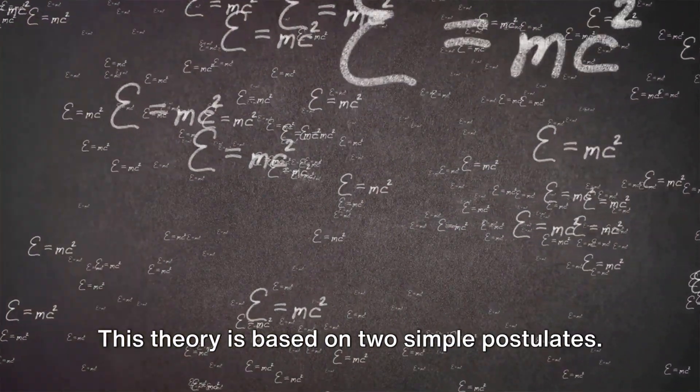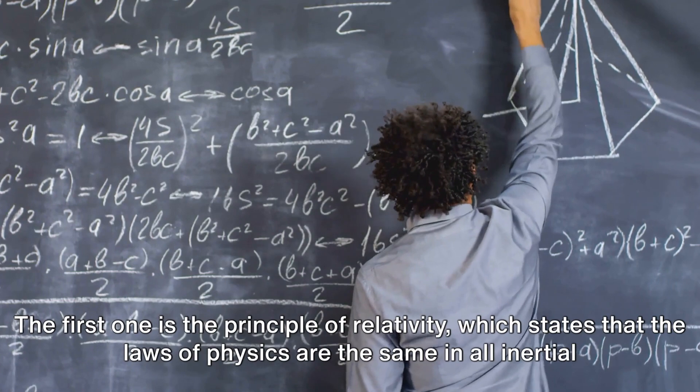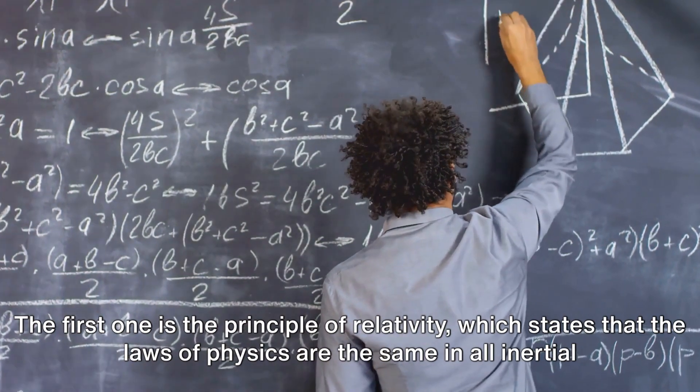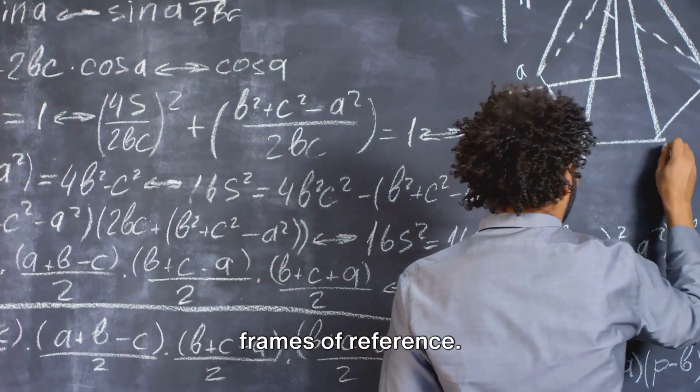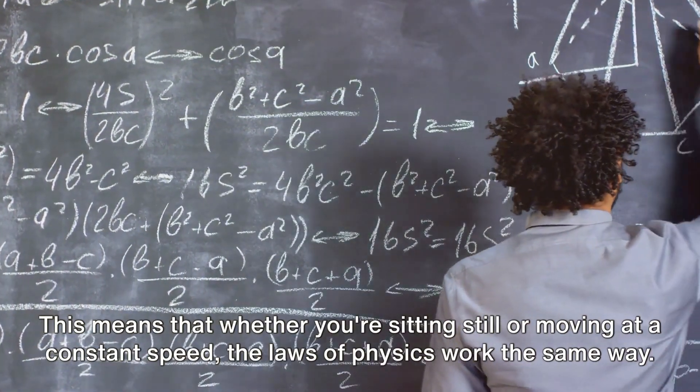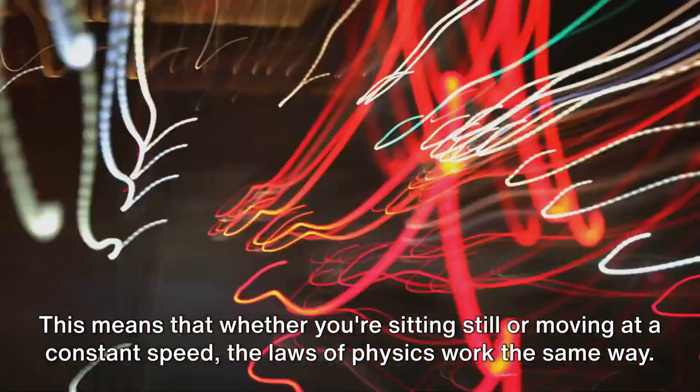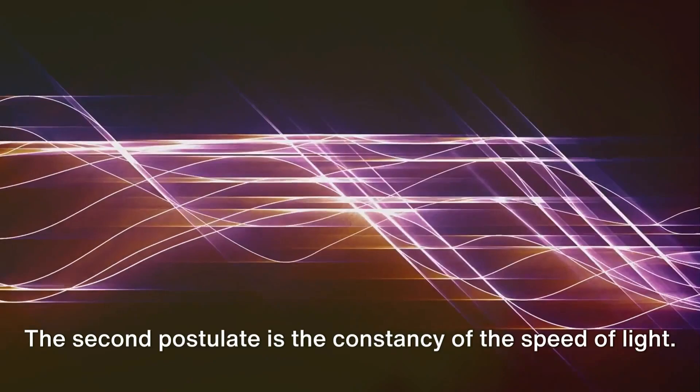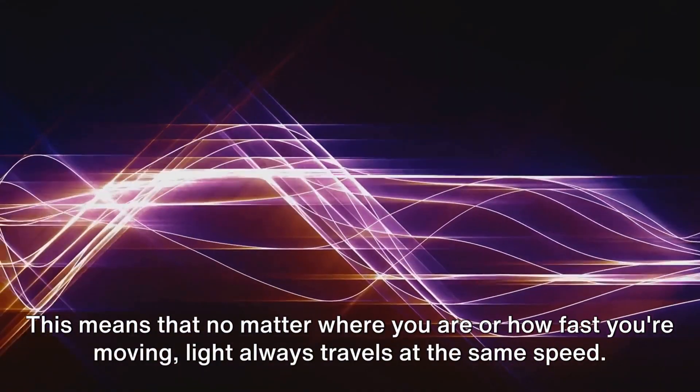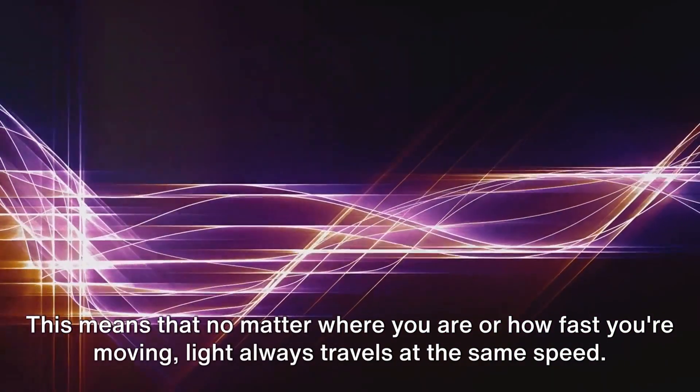This theory is based on two simple postulates. The first one is the principle of relativity, which states that the laws of physics are the same in all inertial frames of reference. This means that whether you're sitting still or moving at a constant speed, the laws of physics work the same way. The second postulate is the constancy of the speed of light. This means that no matter where you are or how fast you're moving, light always travels at the same speed.